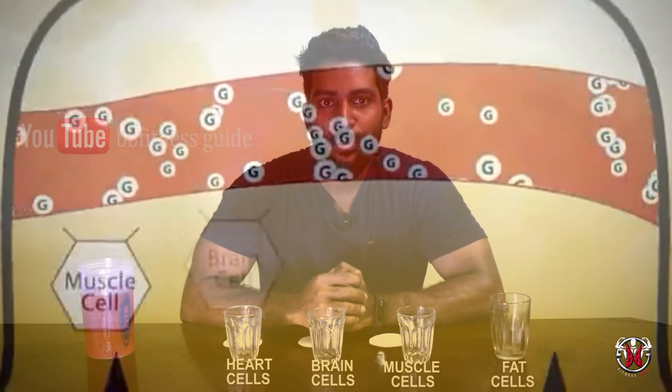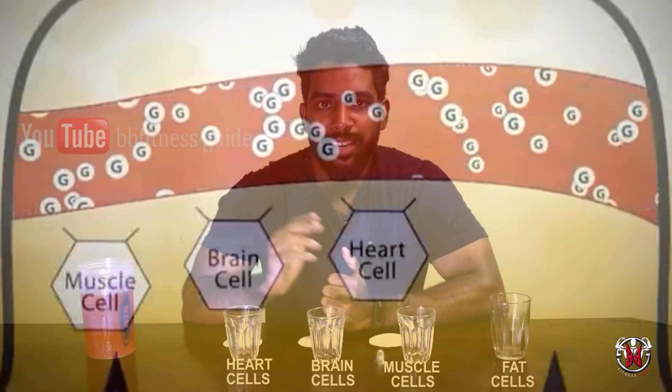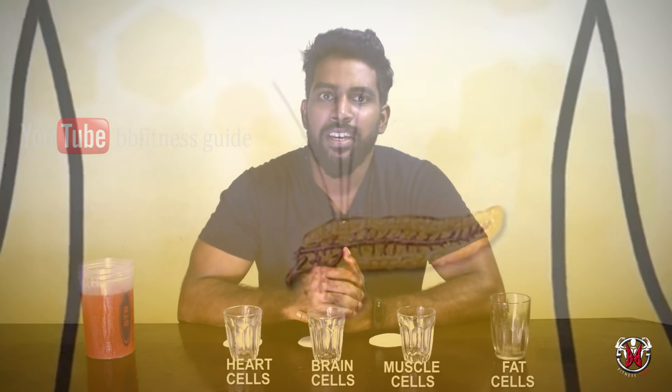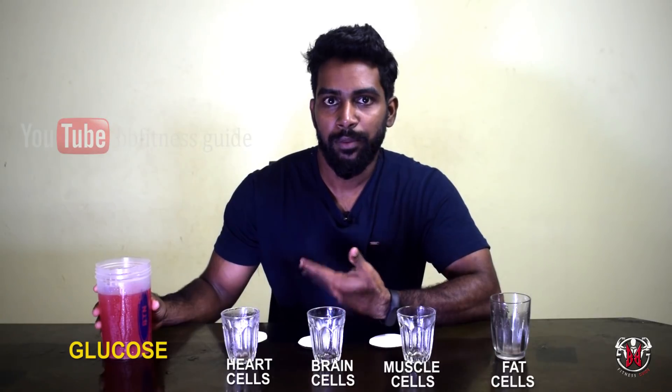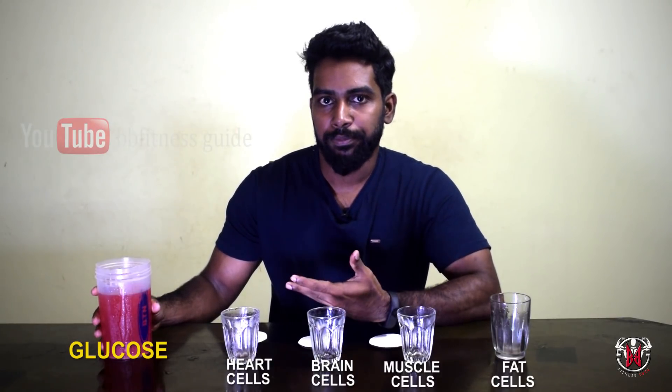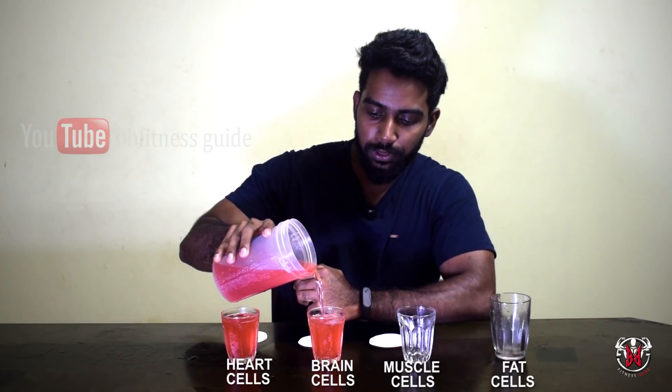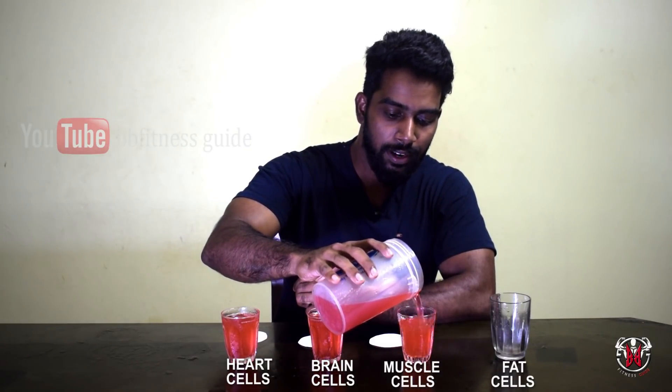Heart cells, brain cells, and muscle cells all use energy. We need to calculate the normal stage, which involves glycogen and blood glucose. At the time of digestion, the pancreas is involved. These three cells can absorb glucose. Insulin is needed to get glucose into those cells.